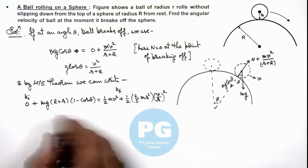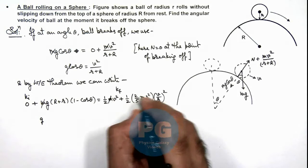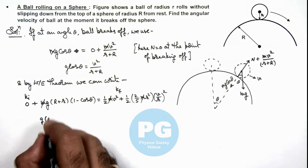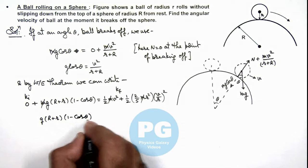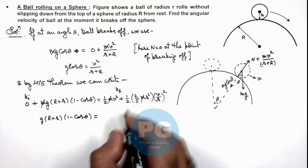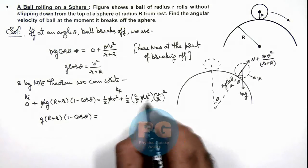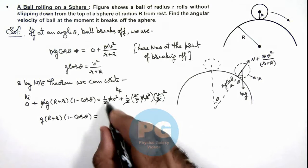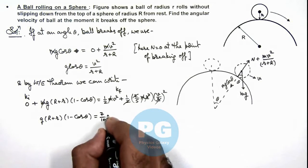Now if we simplify this, m gets cancelled out in the equation. This gives g(R+r)(1 - cos theta) equals, on simplifying, ½v² plus 1/5 v² as the 2 gets cancelled out and r gets cancelled out. So this ½ plus 1/5 is 7/10 v².